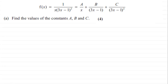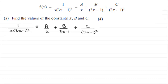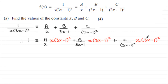Welcome back. First of all, copy out the question — I've done that already to save time. Then we multiply both sides by the denominator, in other words by x times (3x minus 1) all squared. What happens is that leaves us with 1 on the left side, and we multiply each of the terms on the right by x times (3x minus 1) all squared — I've done that step for you as well.